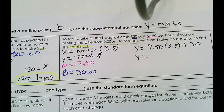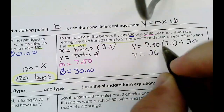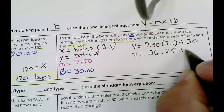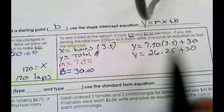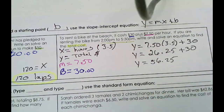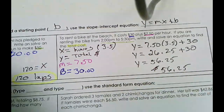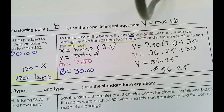$7.50 times 3.5 gives us $26.25, plus $30. Adding that up: y is equal to $56.25. So it costs $56.25 to rent the bike.